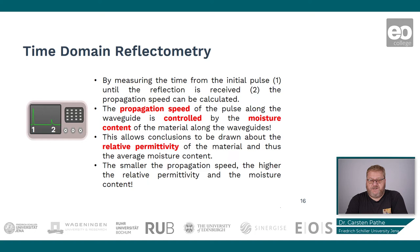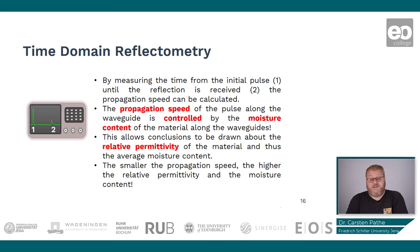To say something about moisture content we need to know the propagation speed of the pulse along the waveguides. To get this speed we have the two responses visible on the oscilloscope, and we know the time elapsed between these two points. When knowing the propagation speed we can draw conclusions on the relative permittivity, and this gives us information about the average moisture content. As a rule of thumb: the smaller the propagation speed, the higher the relative permittivity and also the moisture content in the soil.